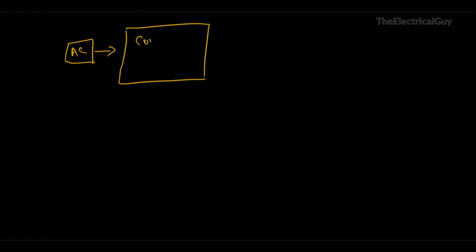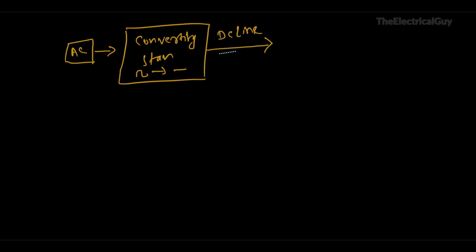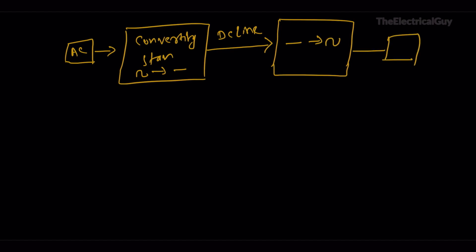So when we say high voltage direct current transmission, what comes to mind is: first we will have AC coming in. That AC will be connected to the converting stations, which will convert AC into DC. After that, there will be a direct current transmission line. And again there will be a station converting the incoming DC into alternating current again, and then the AC transmission will continue. That's the general diagram, but certainly there are a lot of other things involved in HVDC transmission.